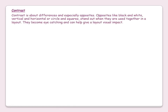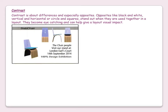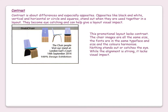Contrast. Contrast is about differences and especially opposites — like black and white, vertical and horizontal, or circles and squares. These stand out when used together in a layout, becoming eye-catching and helping give a layout visual impact. In this example of a slab chair, the promotional layout lacks contrast. The chair images are all the same size, the fonts are in the same type and size, and the colors harmonize. Nothing stands out or catches the eye. While the alignment is strong, it lacks visual impact.